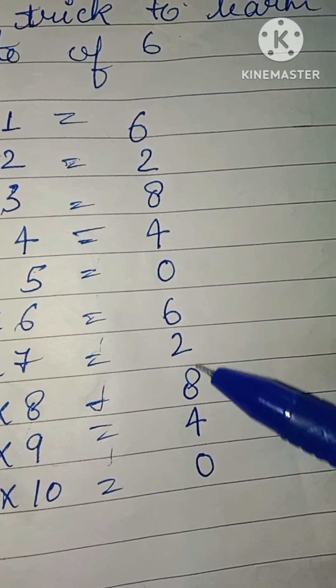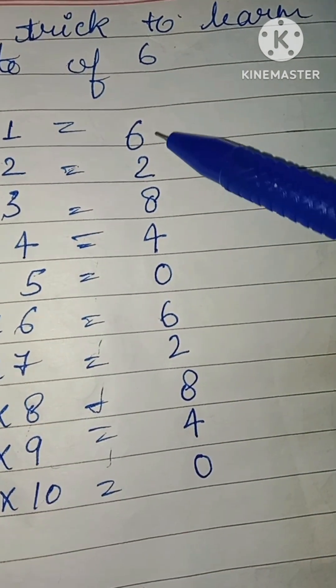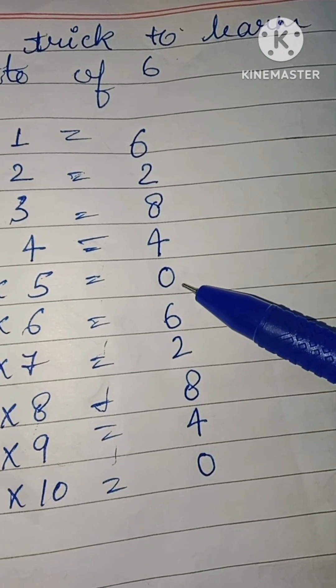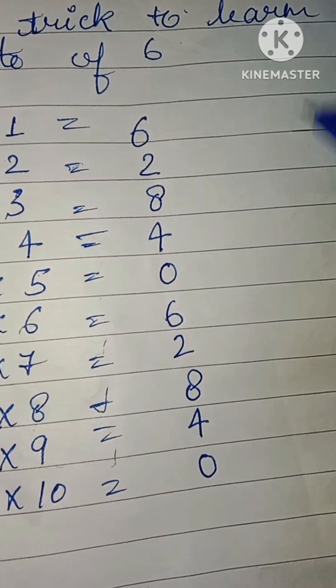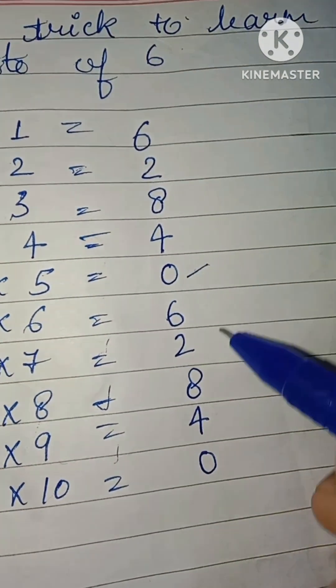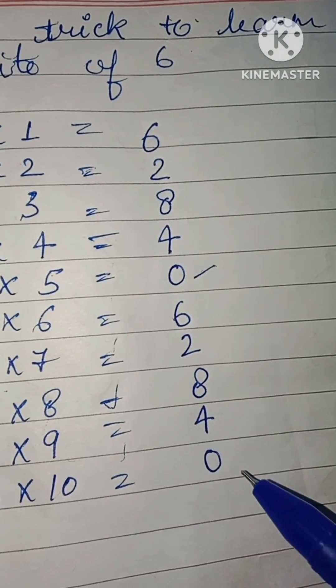Again you have to repeat these numbers. This is the simple trick to learn the table of six. Now one more step you have to add.